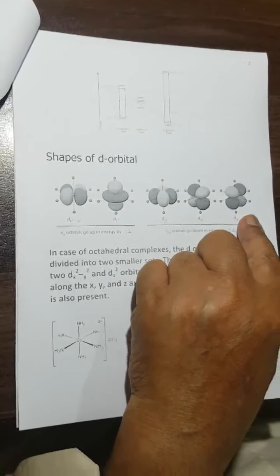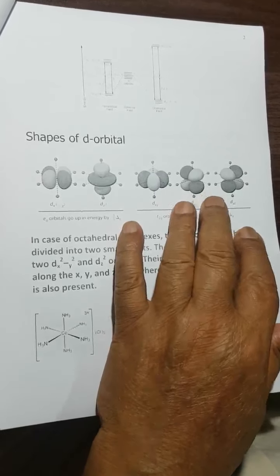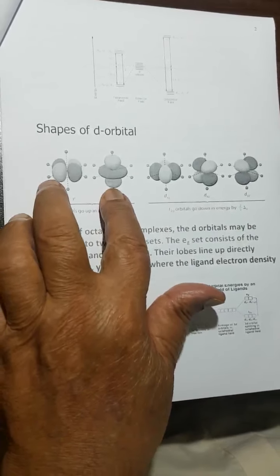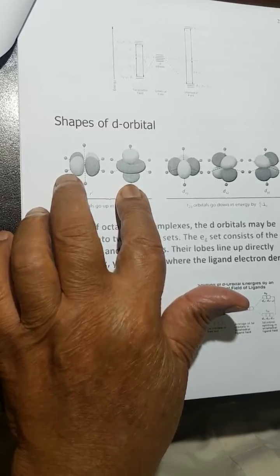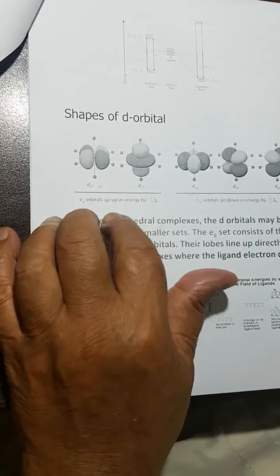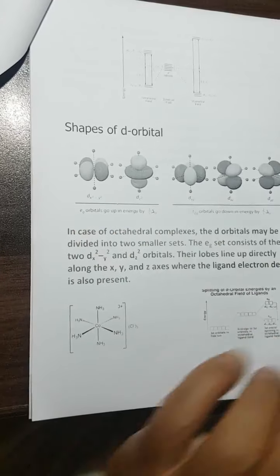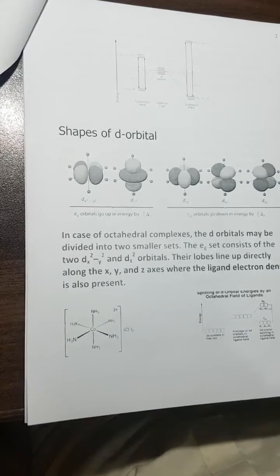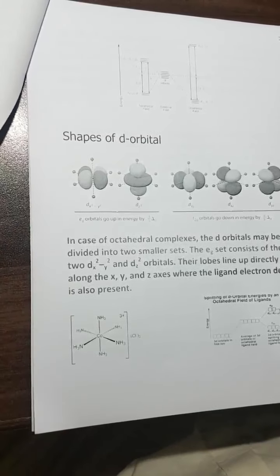The distortion is much stronger if there is unequal occupation in the eg set compared to the t2g set. Thank you for reading and listening.